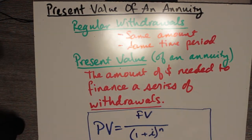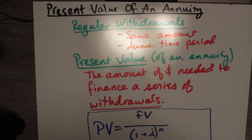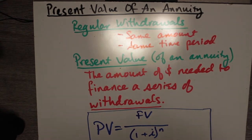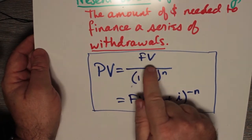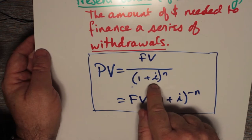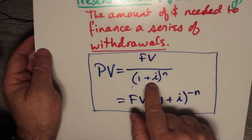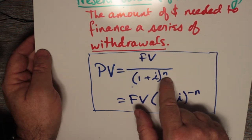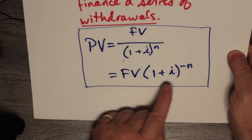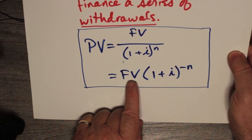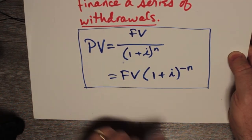The present value of an annuity is the amount of money needed to finance a series of withdrawals. In other words, if you're saving up to set up a fund you're going to withdraw from, how much money do you need to put in right now? Present value PV equals the future value divided by one plus the interest rate divided by the number of compounding periods per year, raised to the power of compounding periods times time in years. We can also use negative exponents to write this another way.